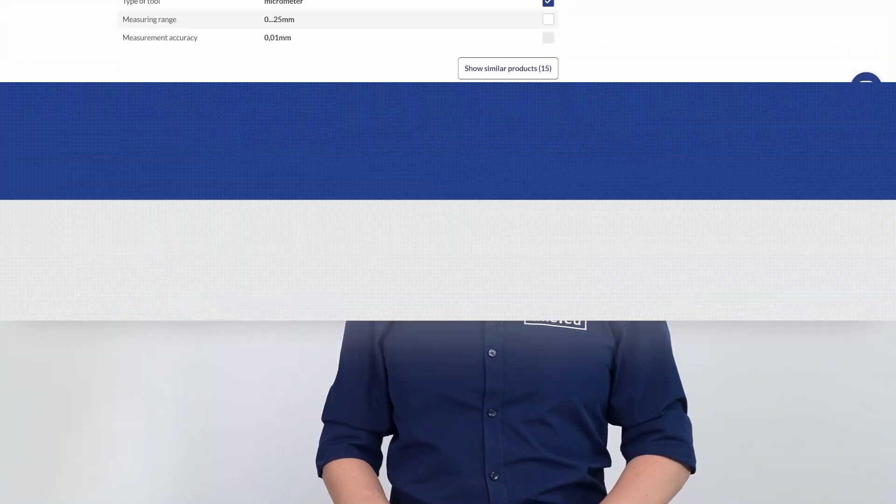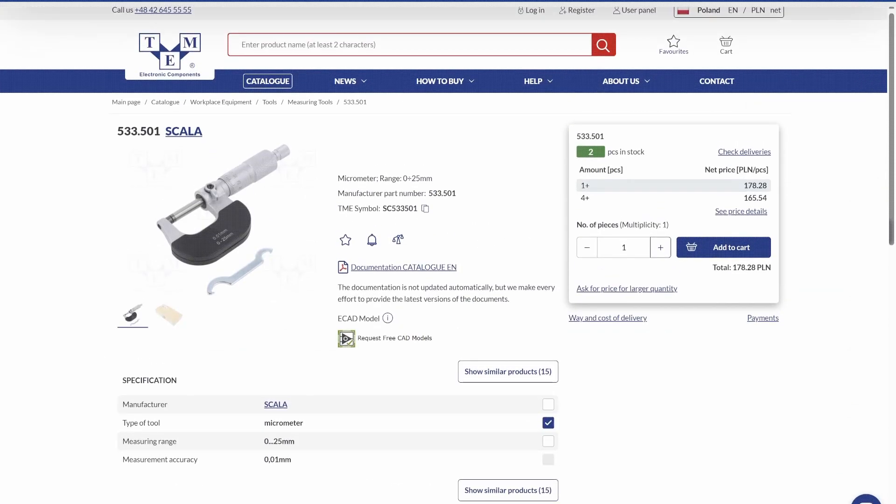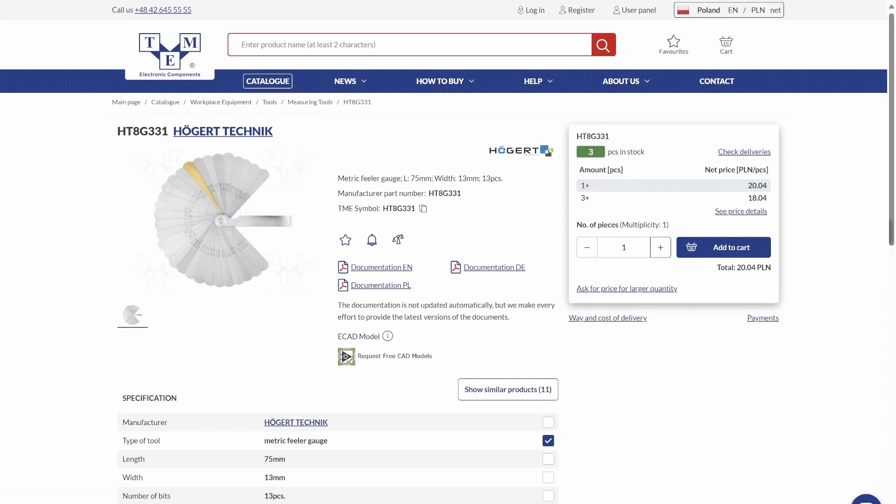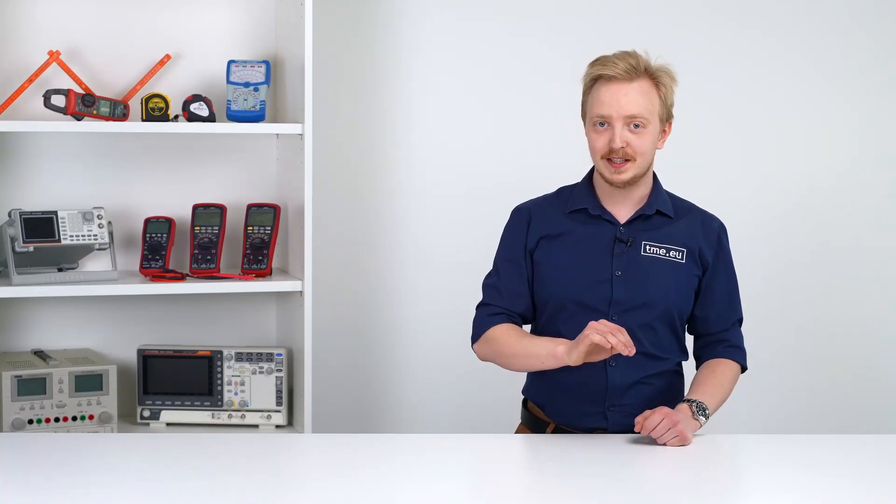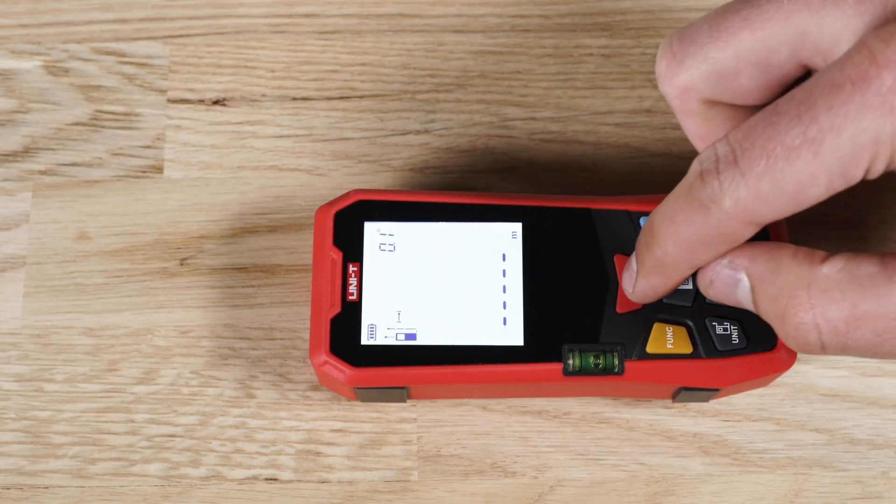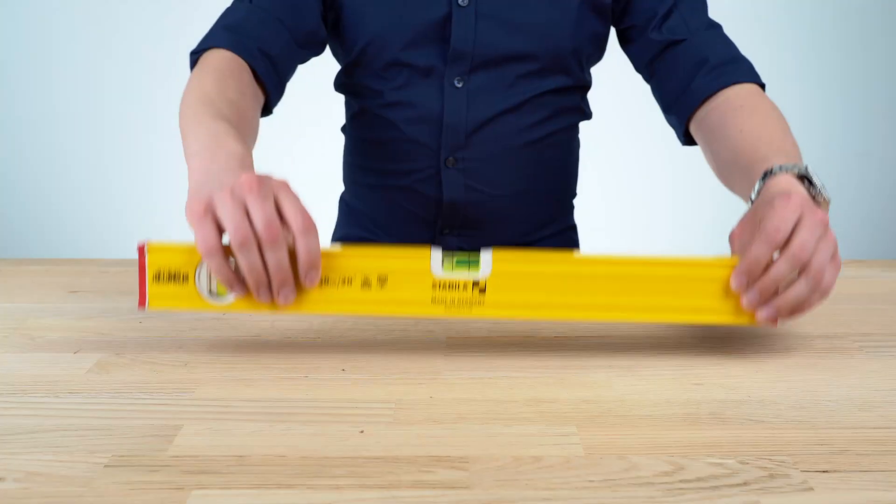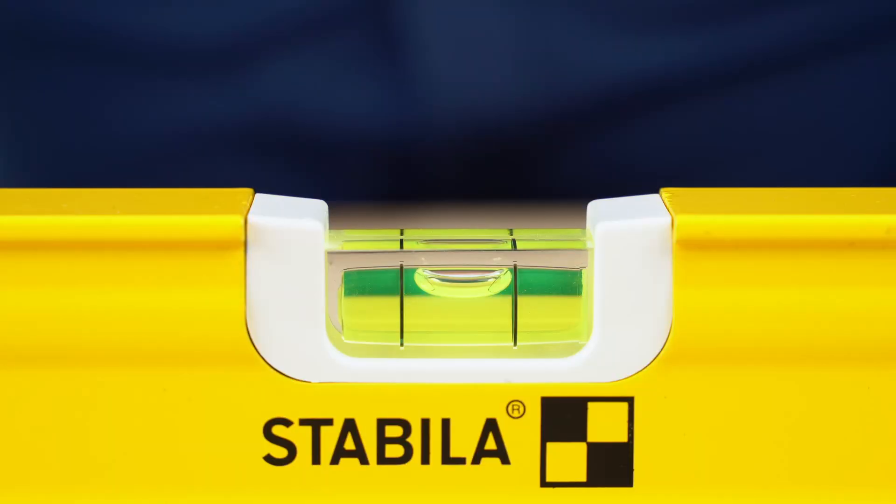For even more precise measurement you can get a micrometer, or if you want to check a gap between two objects, a filler gauge. In opposite there are laser distance meters. They are made for measuring bigger objects like rooms, and the spirit level for checking if everything is even.